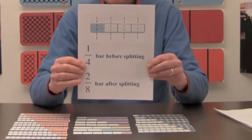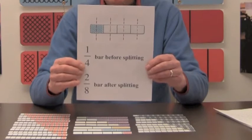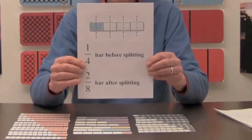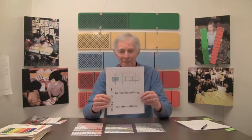It had four parts and one part was shaded, and after splitting each part into two equal parts, there were eight parts and two shaded parts, and the bar represented two-eighths.